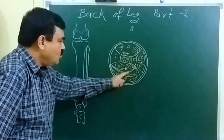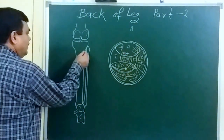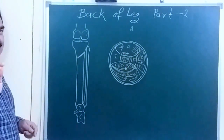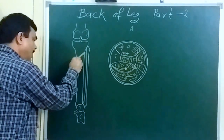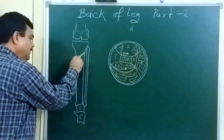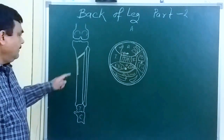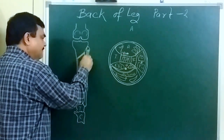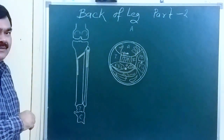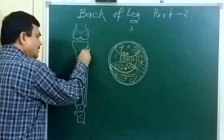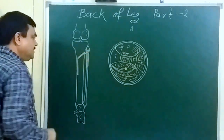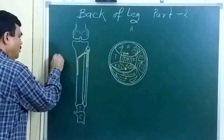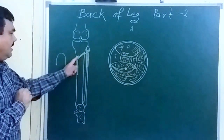First of all we will discuss about the soleus muscle. Here is the soleal line — this is the soleal line. Soleus muscle takes origin from the soleal line, from the upper one-third of the medial border of the tibia, here is the head of the fibula, and the upper one-fourth part of the posterior surface of the fibula. It also takes origin from the tendinous arch. So it takes origin like a dome-shaped area.